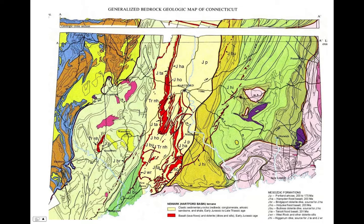We can see evidence of an ancient continental rift valley here in central Connecticut — this is the Hartford Basin, also known as the Connecticut River Valley. We have yellow rocks, which are clastic sedimentary rocks — conglomerates, sandstone, and shale — and red rocks, which are basalt. Those are the two types of rocks we would expect to find in a rift valley. If we look at the cross section from A to A prime, we can see that the thick black line is a normal fault, and another line running through here is also a normal fault. So we see sedimentary rock, basalt, and normal faults — this is evidence of an ancient divergent plate boundary and a continental rift.